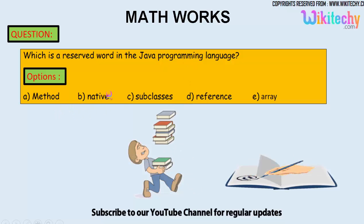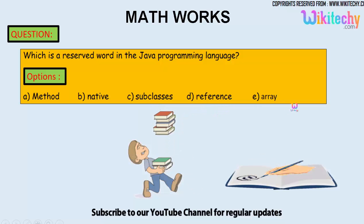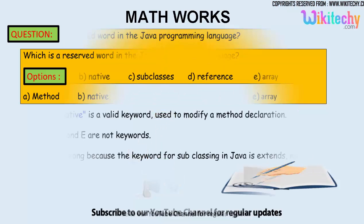The options are: method, native, subclasses, references, and array. Let's see which is the reserved word.